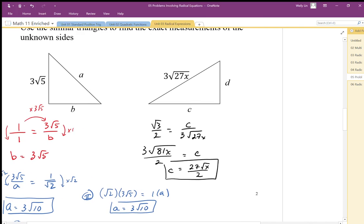For D, we can say that this is exactly half of this length. We can use a ratio D to 3 root 27x is equal to 1 to 2 on our special triangle.